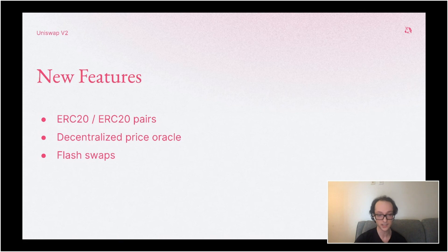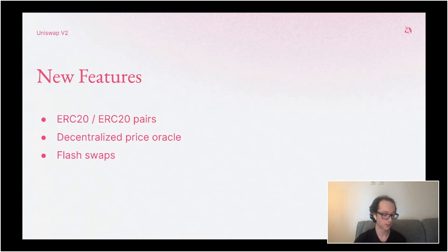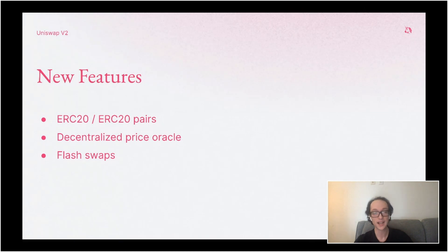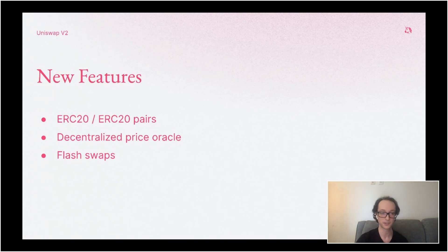Some projects have started building on top of Uniswap V1 as an oracle — just checking the rate, since Uniswap has all these different ERC20 tokens and lets you trade with ETH. But the problem is that it's very easy to, within a short time period, move the price very rapidly. If a transaction comes in to check the price, someone can front-run that transaction, move the price a huge amount, and whatever was relying on that price is in trouble. The last feature we introduced is flash swaps, which I'll talk about more later.